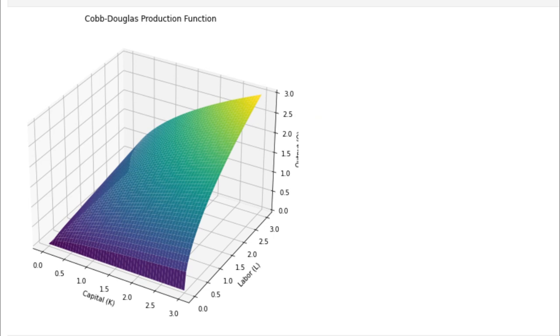Let's consider a point on this graph as an example. Suppose we want to see what happens when we use two units of capital and two units of labor. We can find this point on the graph by following the x-axis to two units of capital, following the y-axis to two units of labor, and then looking up to see what level of output we can produce. The output at this point is 2.